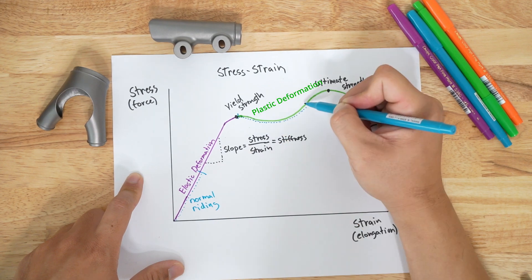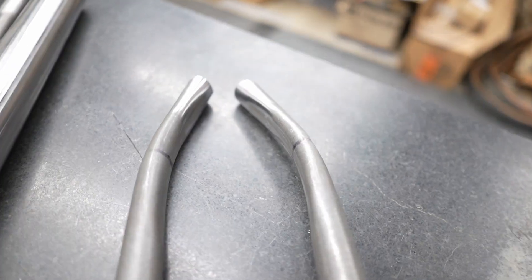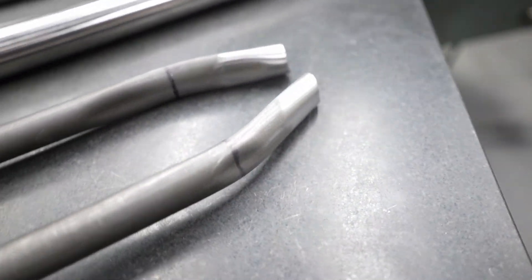Steel has a very large plastic deformation region. The plastic region is what allows you to manipulate steel to form butted tubes, bends, and dimples.